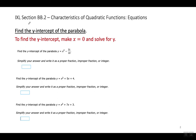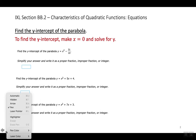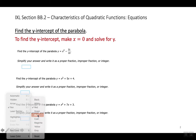So let's start with the first question, which is an easy question. Find the Y-intercept of the parabola. How do I find the Y-intercept? Look at what I wrote in red. To find the Y-intercept, make X equal to 0 and solve for Y. That's always how you find the Y-intercept. You make X equal to 0 and solve for Y.